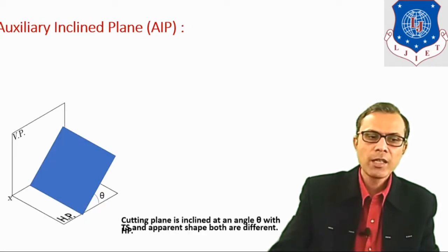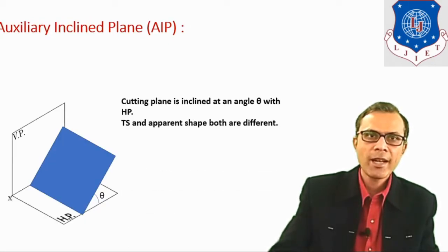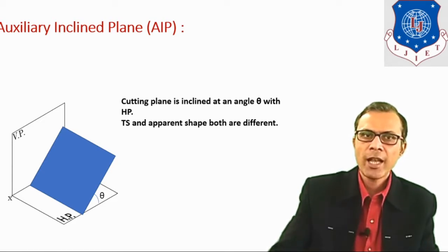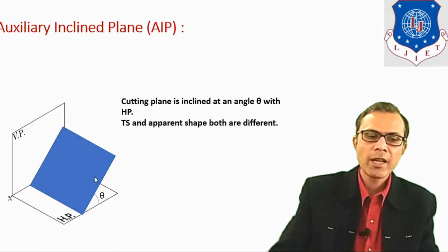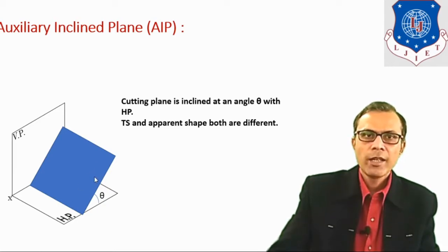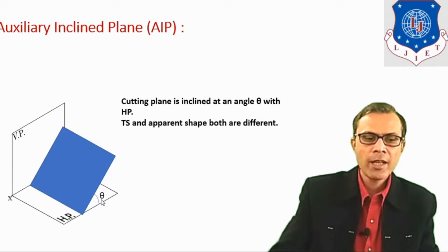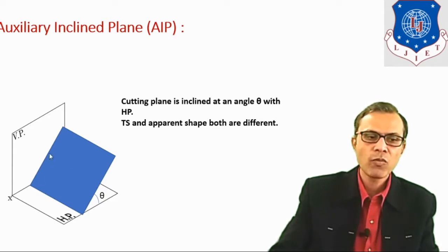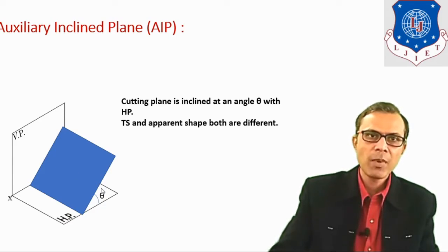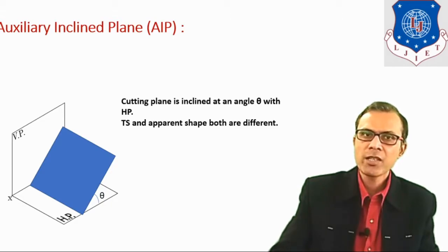The next type of cutting plane is the auxiliary inclined plane, in short form written as AIP. Its position is inclined at an angle theta with HP and it is perpendicular to BP. If any object is cut by this type of cutting plane, then the true shape of the section and the apparent shape both will be different.